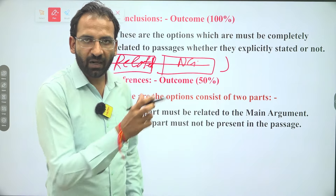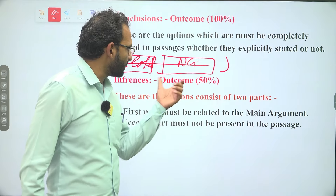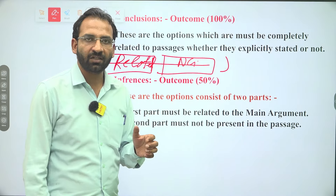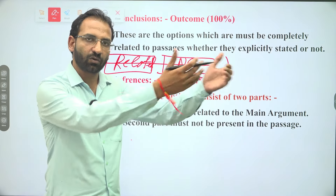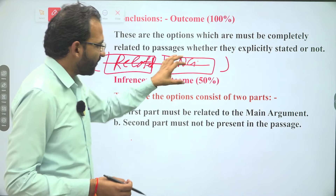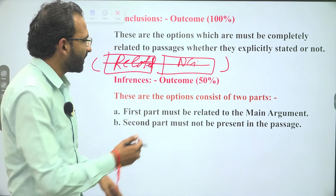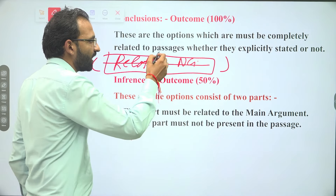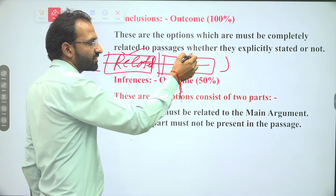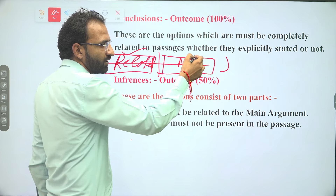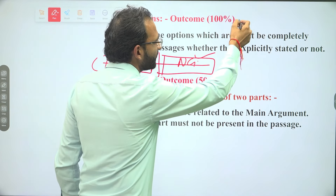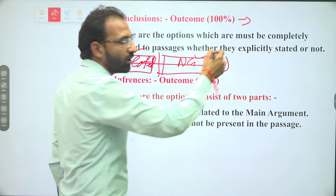The rest part of an inference ka option aapke passage mein hona nahi chahiye — that means it must not be explicitly stated in the passage. Inference ko identify karna bahut easy hota hai: half information hamesha passage se hogi, rest information passage ke bahar se.